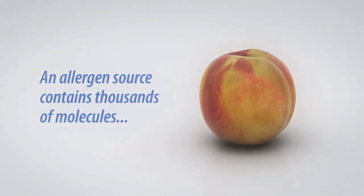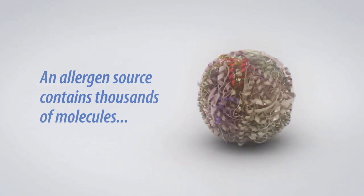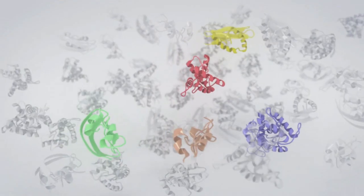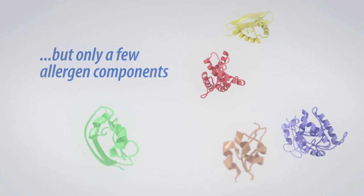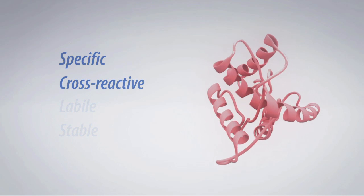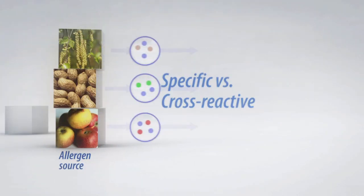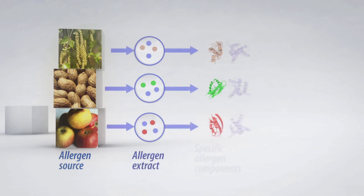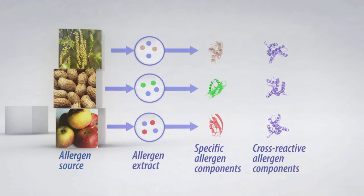Let me explain. An allergen source contains thousands of molecules, but only a few allergen components or proteins are responsible for the majority of reactions. Allergen components can be classified by their stability and even further defined as specific or cross-reactive. For example, complete allergen sources such as ragweed or peanut contain numerous allergens that can be extracted and further identified as either specific to the source or cross-reactive which are non-specific to the source.